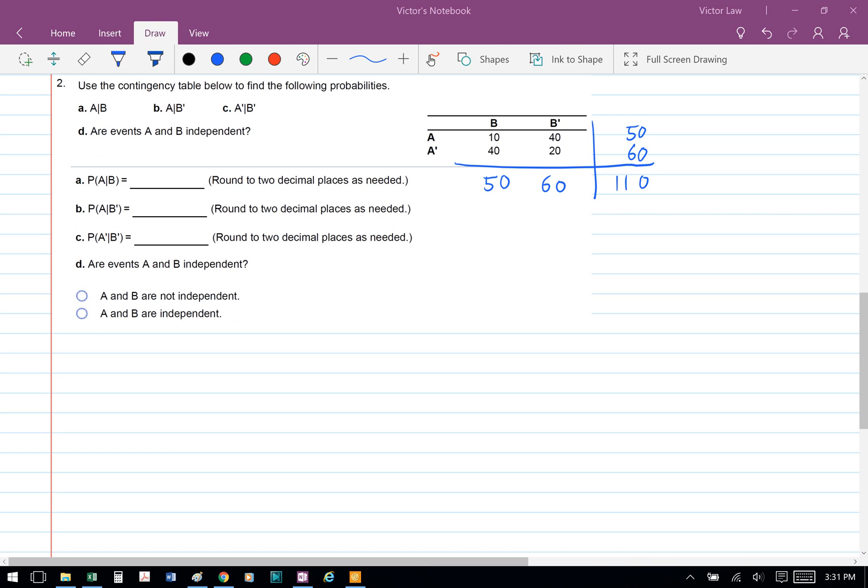On the contingency table, we're going to add up the column total for B which is 50 and B' is 60, and the row total for A is 50 and A' is 60.